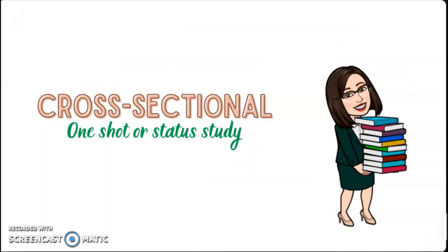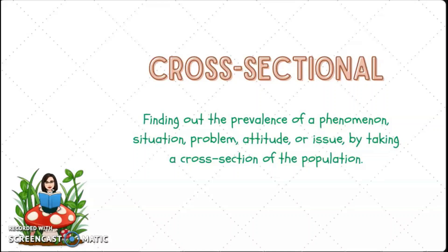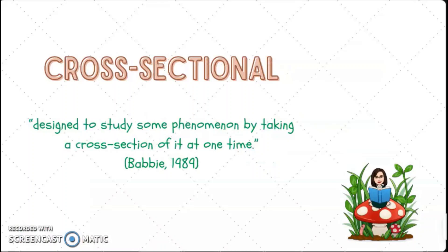Cross-sectional studies — just like what I've mentioned — you only meet your respondents once. It is also called a one-shot or status study. Whatever you can gather at the moment is the only data you will gather. It involves finding out the prevalence of a phenomenon, situation, problem, attitude, or issue by taking a cross-section of the population, meaning the representative group or sample. According to Babi in 1989, it is designed to study some phenomenon by taking a cross-section of it at one time.